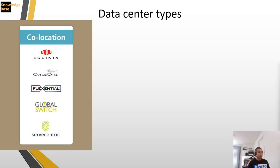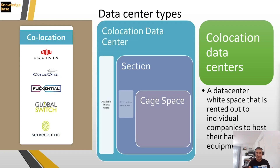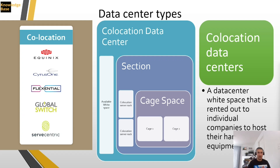Co-location data centers are larger shared data centers built by companies that sell you infrastructure or space inside their facility so you can run your services. You can rent a rack space or take a cage fitting 10 or 5 racks depending on your requirements. In some cases you can also rent processing power and storage as part of a managed services offering.